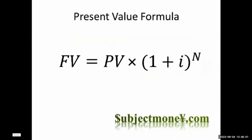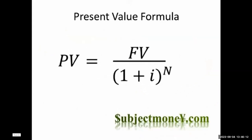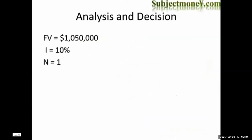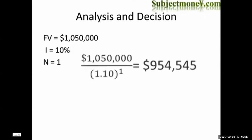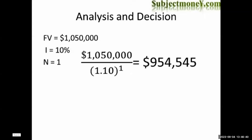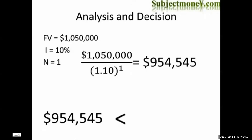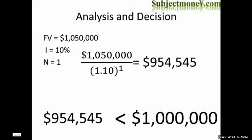Remember the simple future value formula? One of its variables was the present value. We rearrange the future value formula to get the formula to solve for present value — it simply reverses the process. With a future value of $1,050,000, a discount rate of 10%, and one period, the present value of receiving $1,050,000 in one year is $954,545 — that's $45,455 less than $1,000,000. With this analysis, you should choose the $1,000,000 now instead of $1,050,000 in the future.